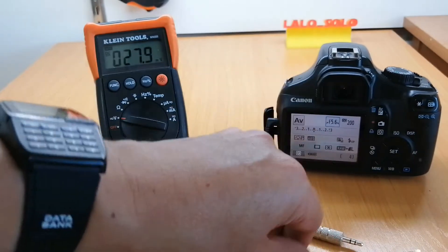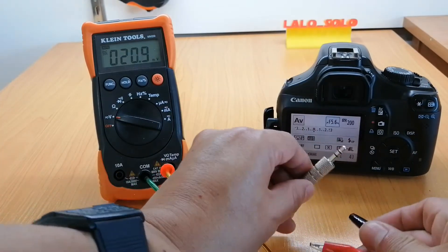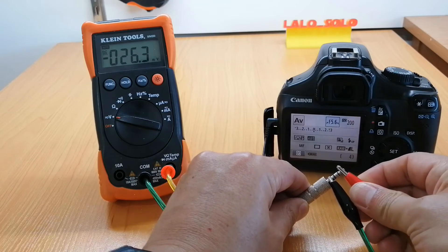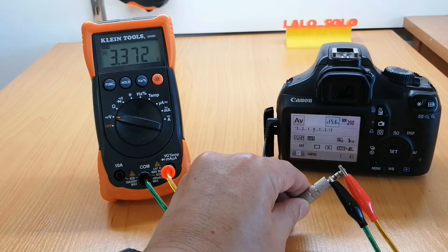Let's connect the tip and sleeve of the jack to the multimeter. We get 3.3 volts across the terminals.